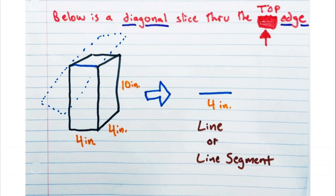Now let's look at what happens if we take a diagonal slice at the edge. Here we have a bit of an interesting situation — what happens when we take a diagonal slice through just the top edge of our rectangular prism? What we need to know is that if we take a diagonal slice just through the top edge, we're going to get a line segment. It's basically like taking just that edge off with a 2D plane cutting along the edge of the shape.